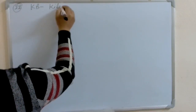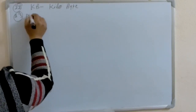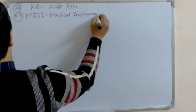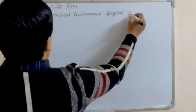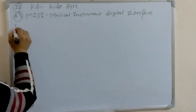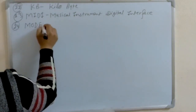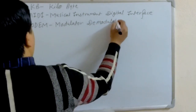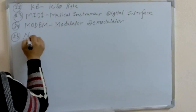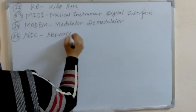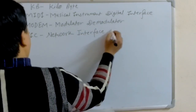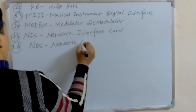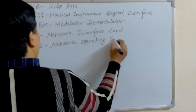KB: Kilobyte. MIDI: Musical Instrument Digital Interface. MODEM: Modulator Demodulator. NIC: Network Interface Card. NOS: Network Operating System.